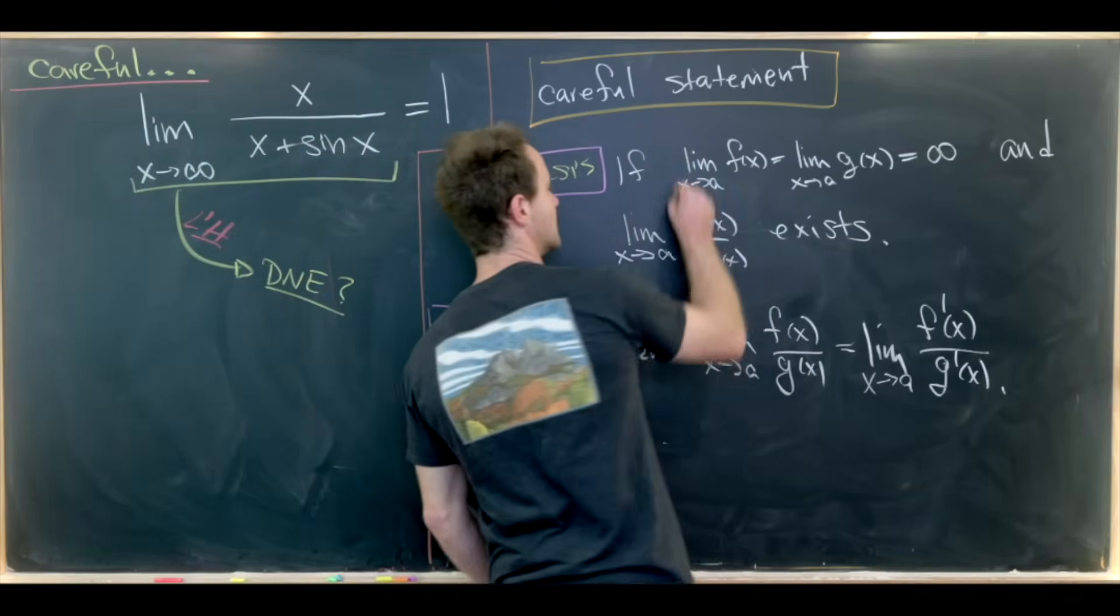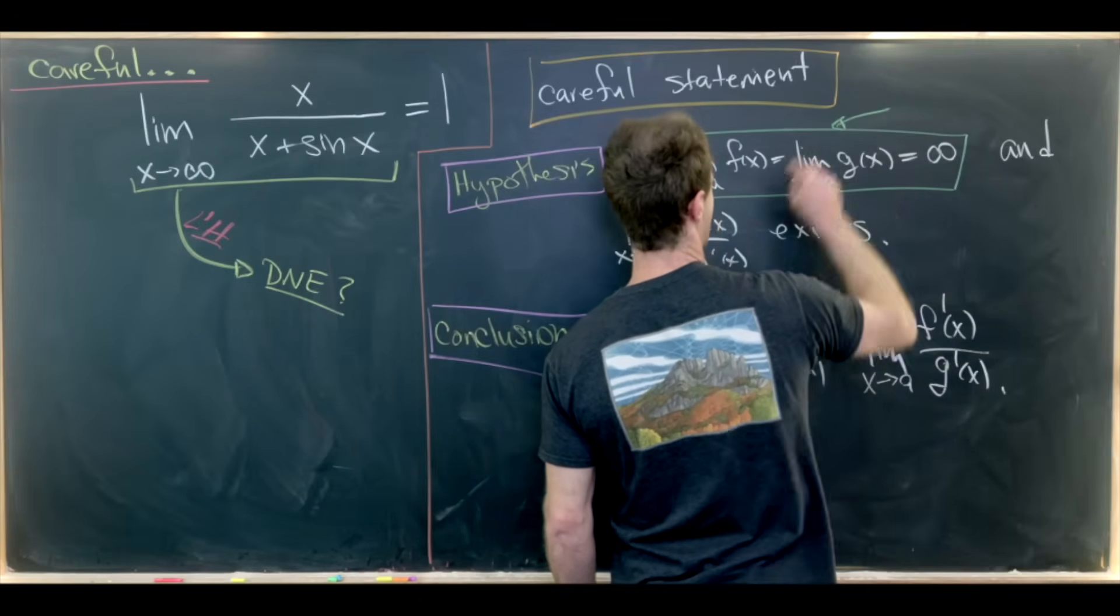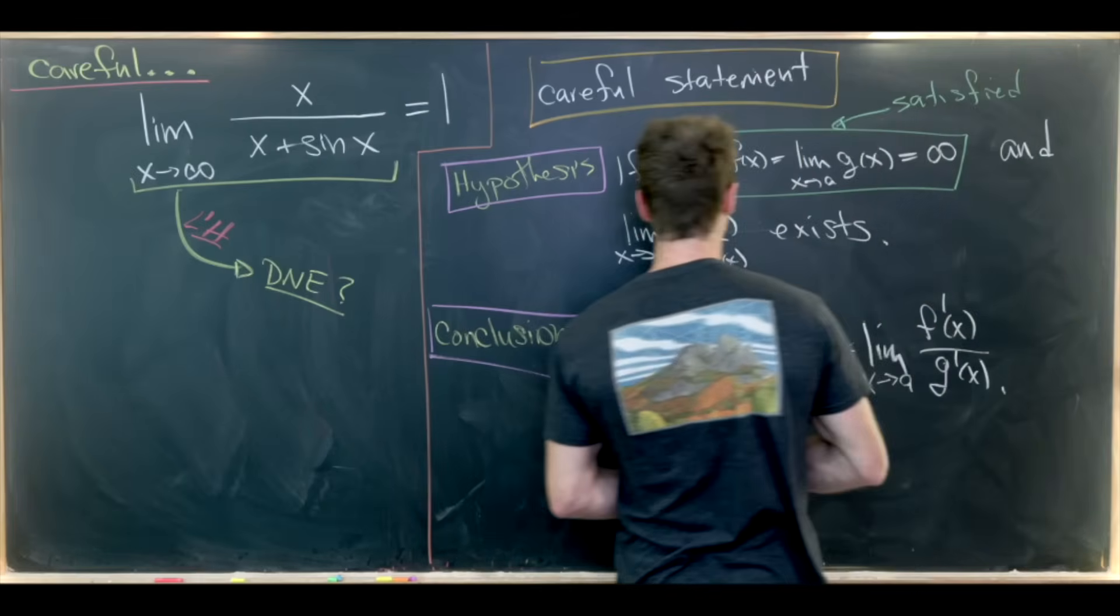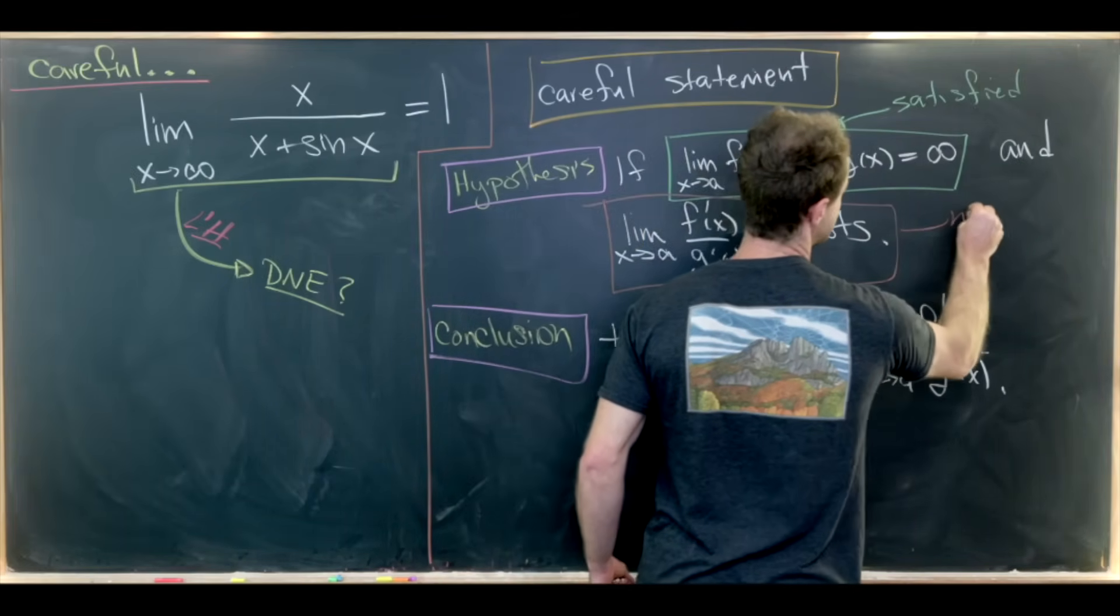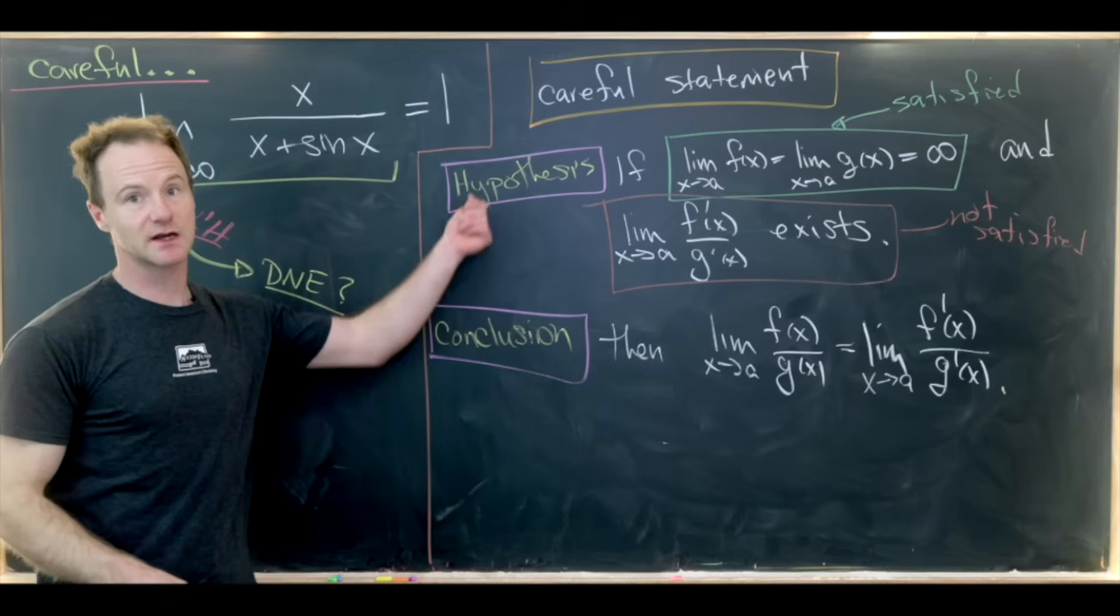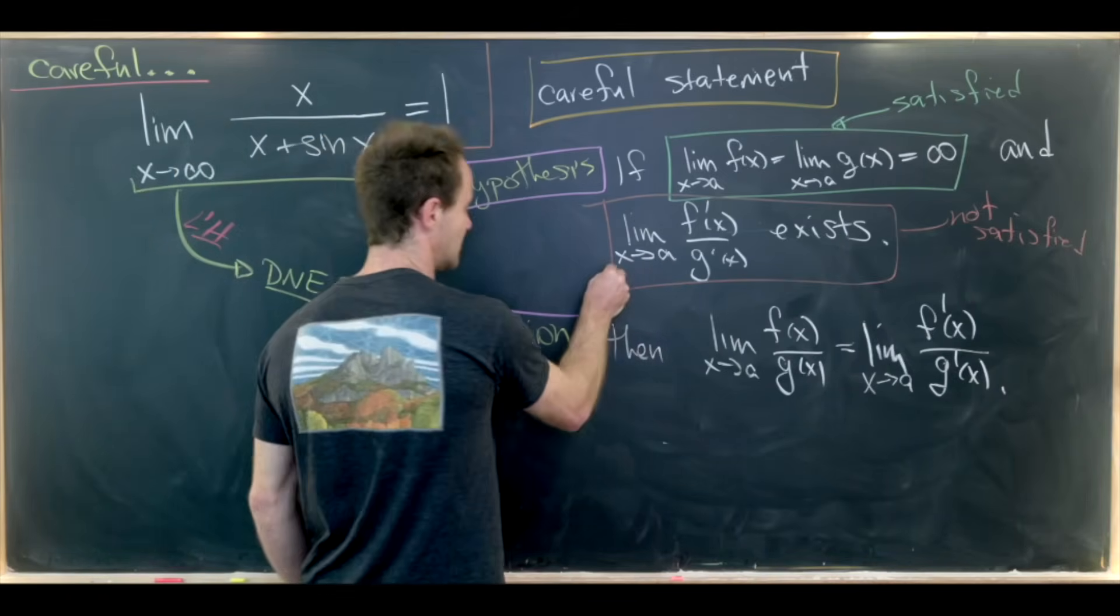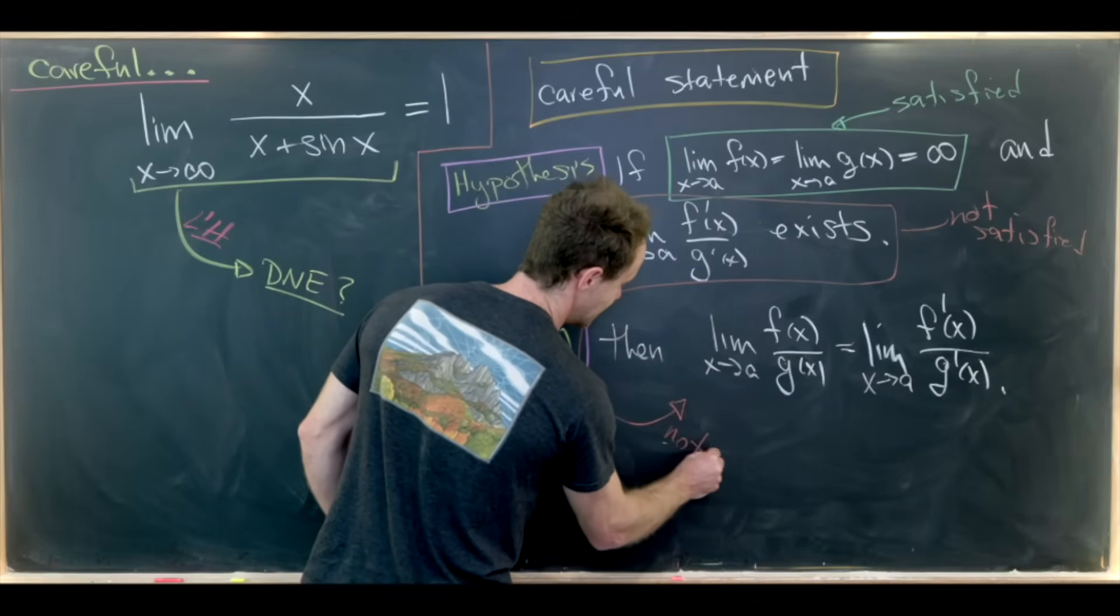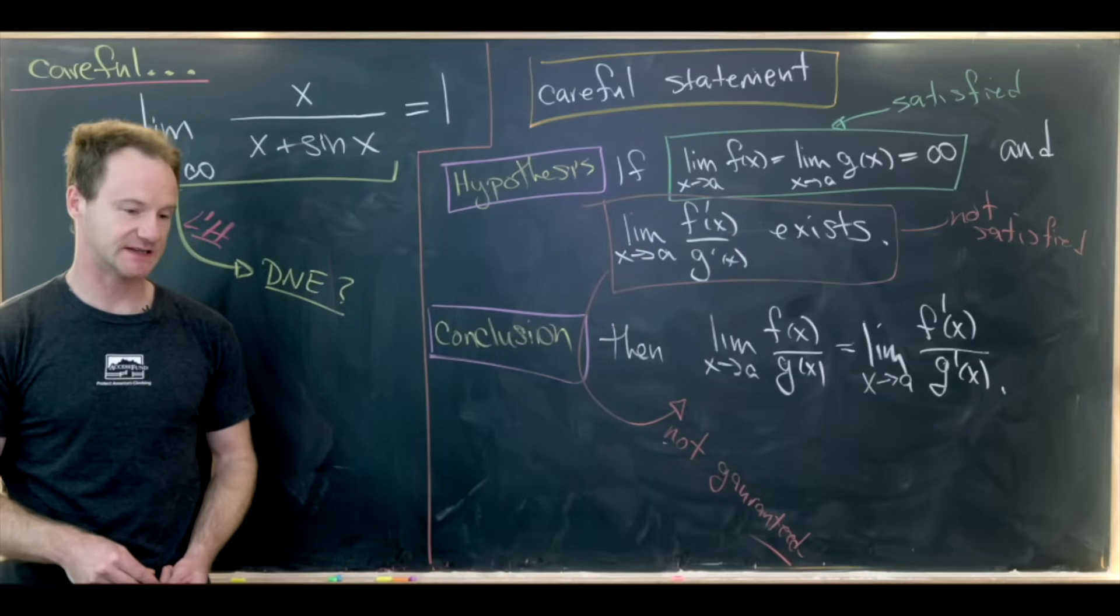Well for our problem we had our first hypothesis satisfied, but the second hypothesis was not satisfied. But that means the complete hypothesis was not satisfied, which tells us that the conclusion was not guaranteed. And that's why we couldn't use L'Hopital's rule in this case.